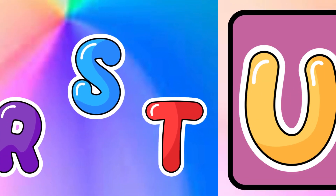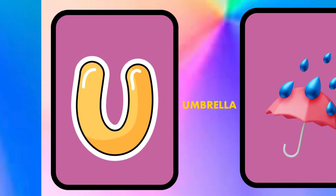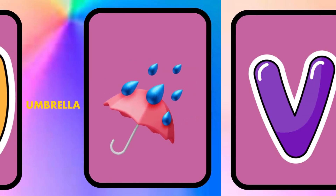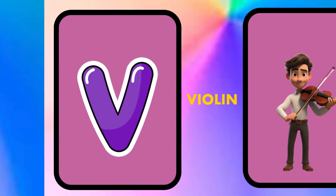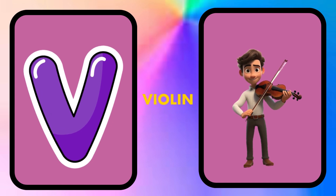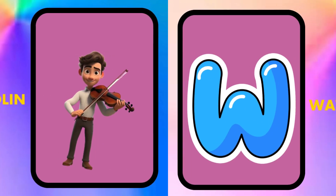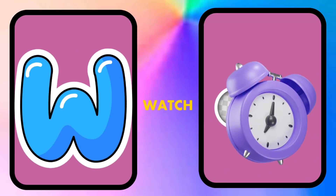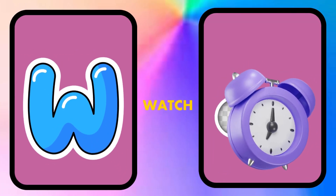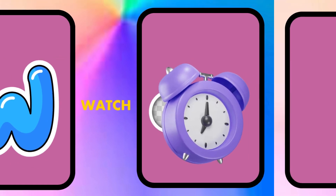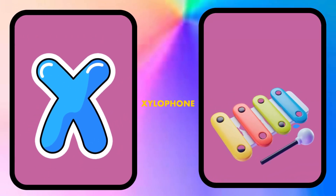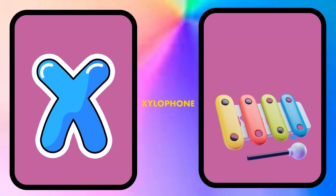U is for umbrella, u-u-umbrella. V is for violin, v-v-violin. W is for watch, w-w-watch. X is for xylophone, z-z-xylophone.